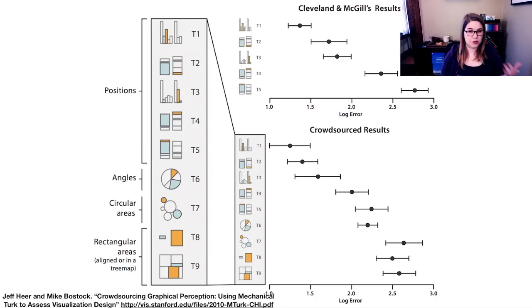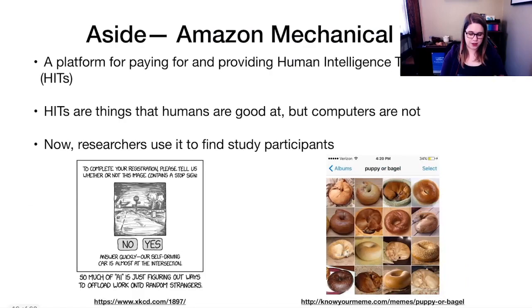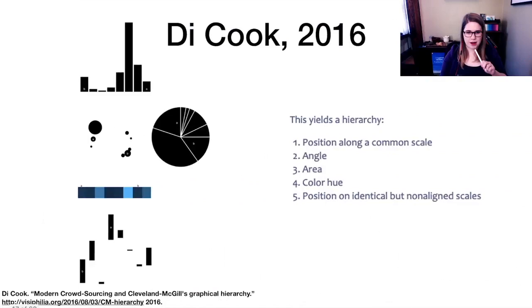Usually from all over the world, there's been a bunch of interesting studies about the demographics of people who do Mechanical Turk work. Some people use it as their main source of income, which is kind of upsetting because it doesn't pay very well. But depending on where you live in the world, if you have access to a computer, it can be a nice way to get some money. So anyway, that's all an aside. But Heer and Bostock, we're able to kind of confirm that what Cleveland and McGill had said in 1985 seems to still ring true.